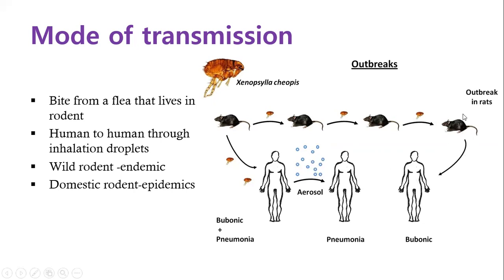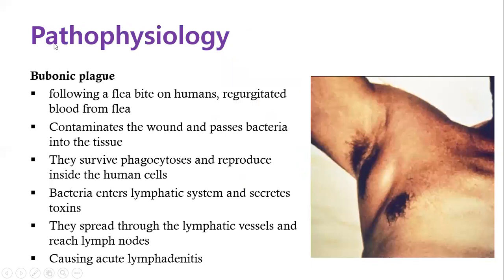Once a person gets infected, they develop bubonic plague, which leads to the formation of buboes — enlargements of the lymph nodes. This can ultimately spread to the blood, causing septicemic plague. It can also affect the lungs, causing pneumonic plague. When someone with pneumonic plague coughs, they expel the bacteria into aerosols, and it is transmitted through inhalation — that is when it becomes highly infectious.